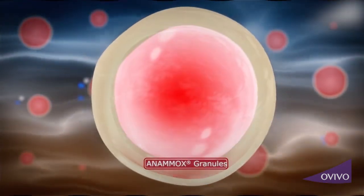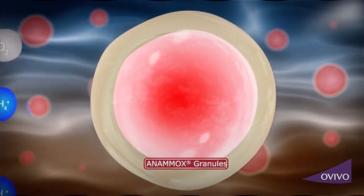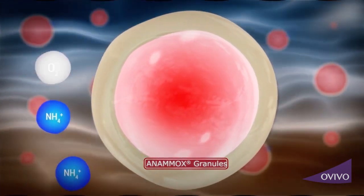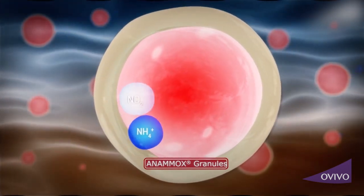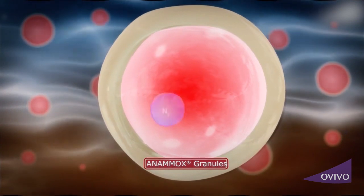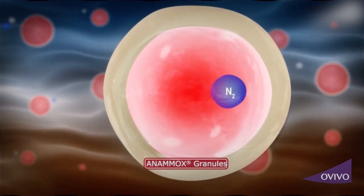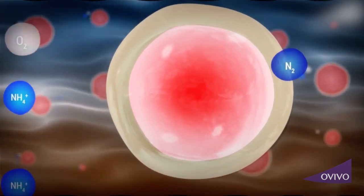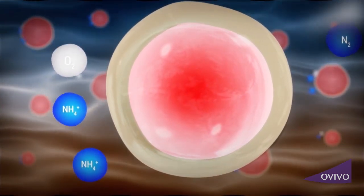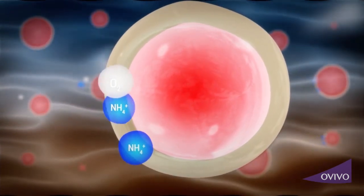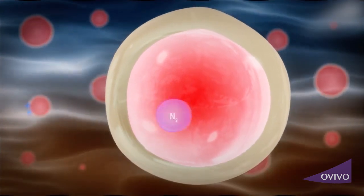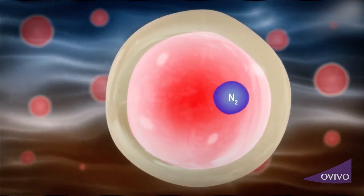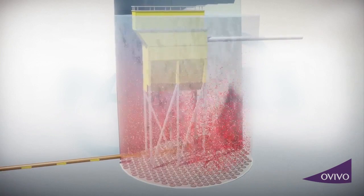The aeration also provides for intense contact between biomass and oxygen to drive the conversion of the ammonium. The Anamox process itself is executed by two different bacteria which coexist in one granule. First, nitrification bacteria oxidize half of the ammonium to nitrite. Then, Anamox bacteria convert the ammonium and nitrite into nitrogen gas.